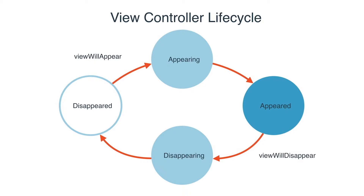In iOS, the Will functions always get called before the Did functions. ViewWillAppear gets called before the ViewController and its view are on screen. ViewDidAppear gets called right after the View and ViewController are on screen. This is really useful if you want something to happen right before or right after a ViewController's view appears. If you override these functions in your ViewController, they will get called. Otherwise, their default and empty implementations in the UIViewController class will get called instead.